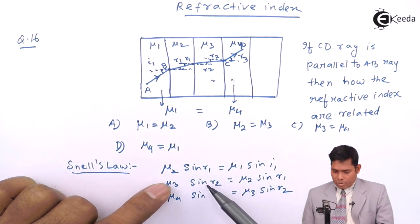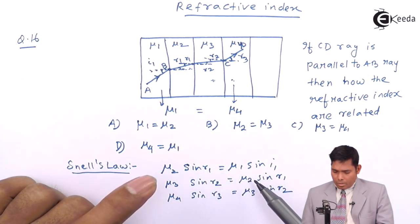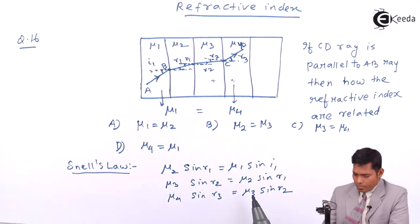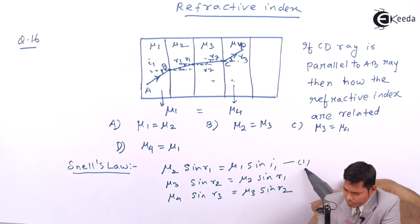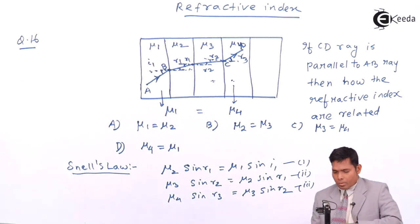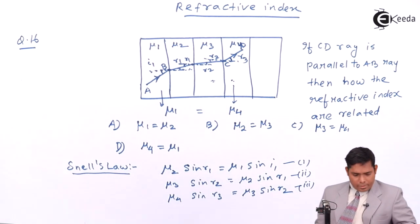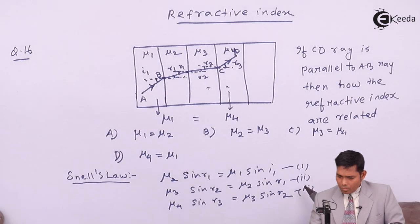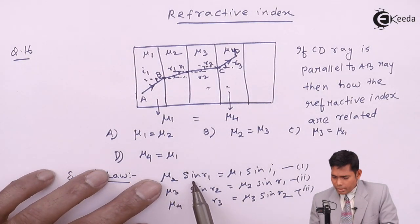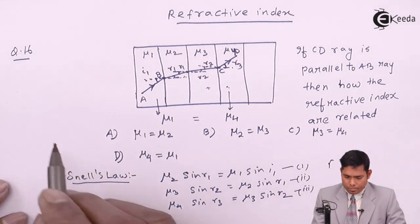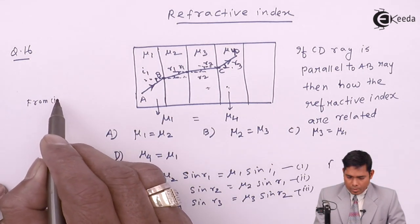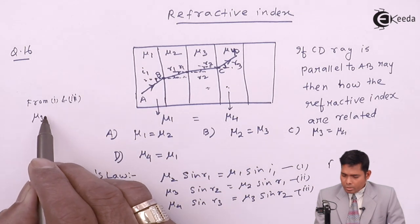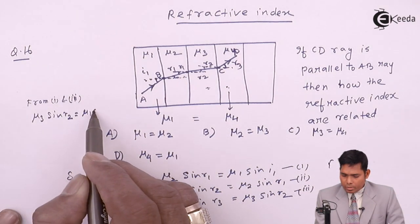So, if they are same, then these two will be same. Again, these and these are same. So, this and this will be same. What I am saying is, from these two equations, 1 and 2, suppose this is 1, this is 2, this is 3. From 1 and 2, you will see here mu2 sine r1, this is also mu2 sine r1. This will be same. That is, mu3 sine r2 is mu1 sine i1.